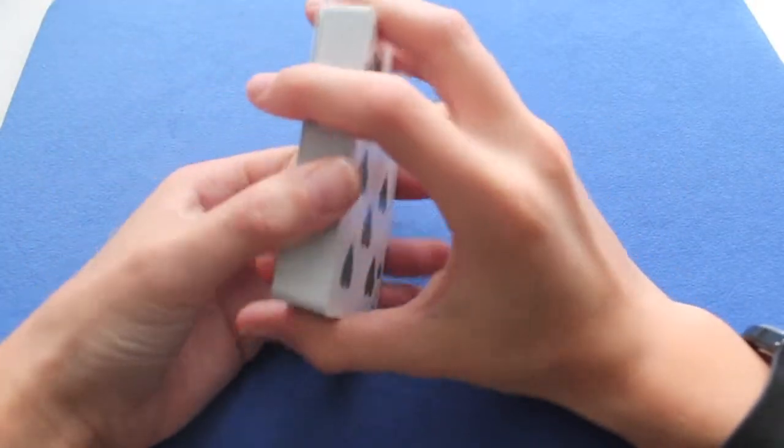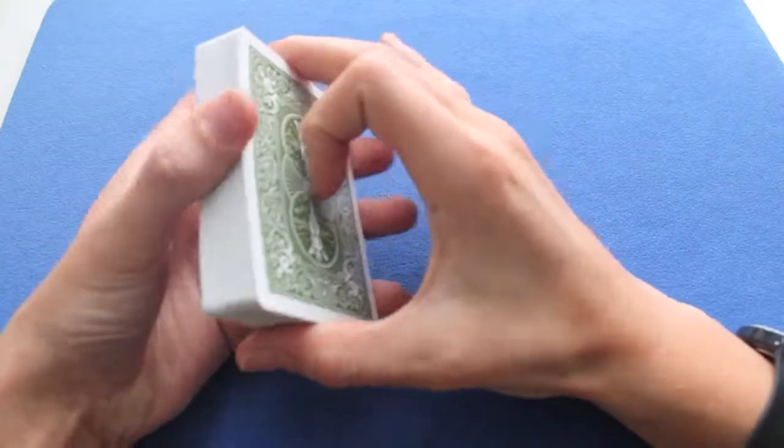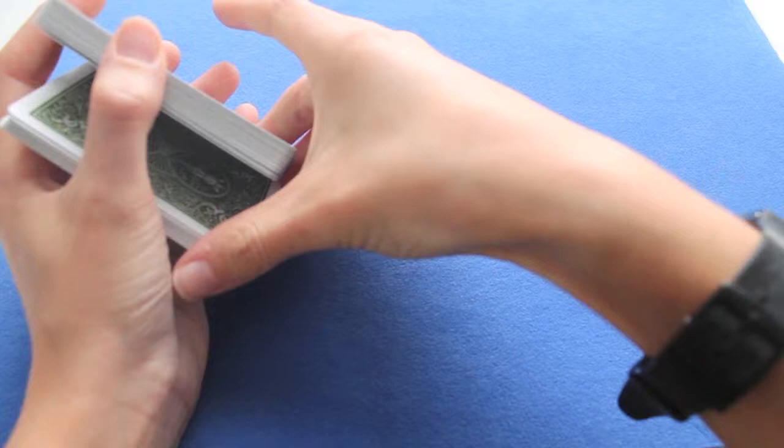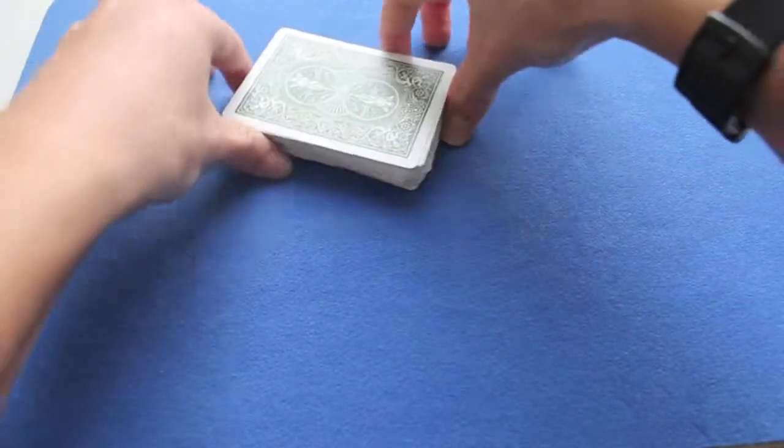You probably saw this one too but spectators once again don't notice because you're talking. So you take the bottom part, about half of the cards, like this. You put it on the table, you take the remaining part and you put it on the top of the bottom part.